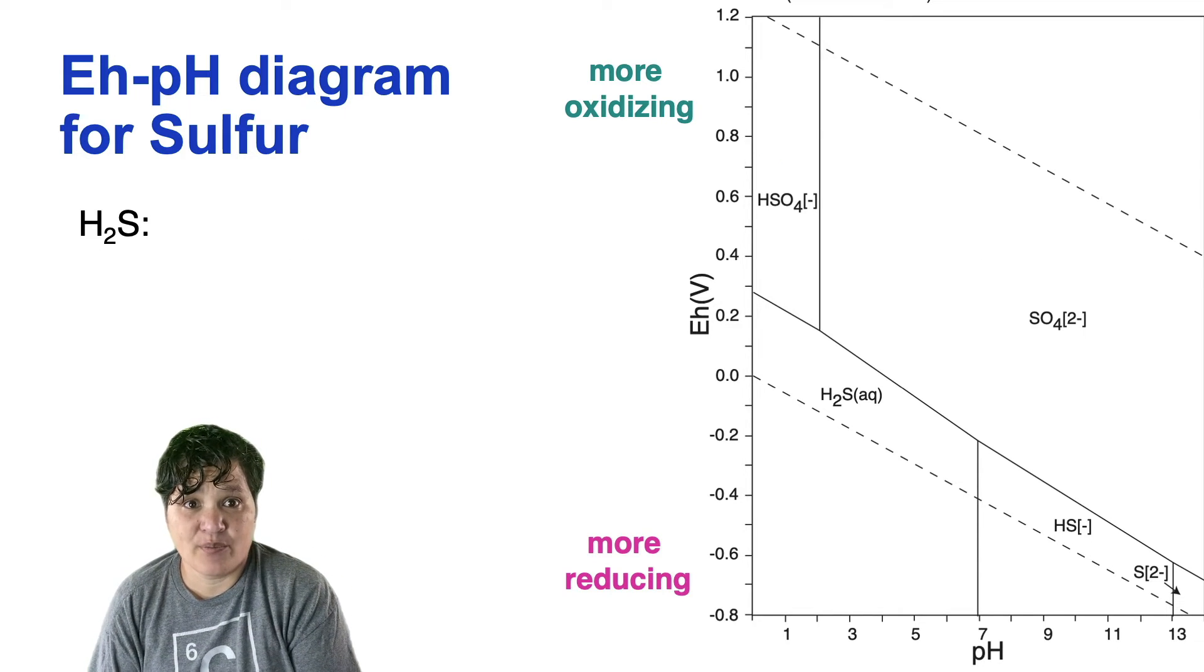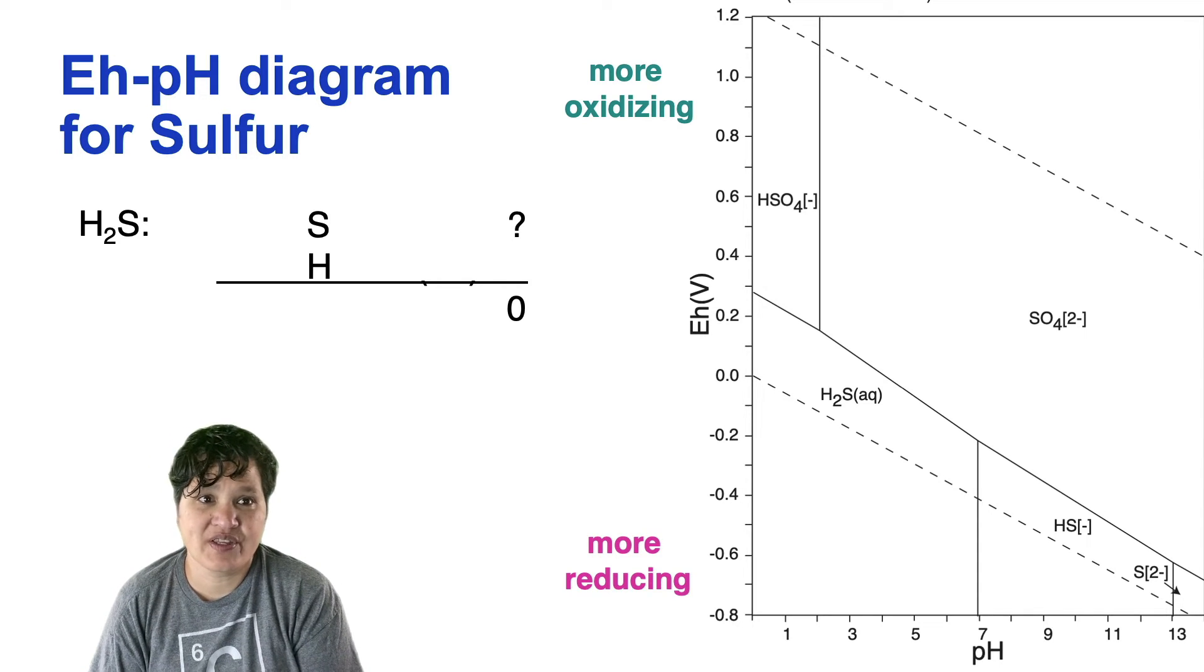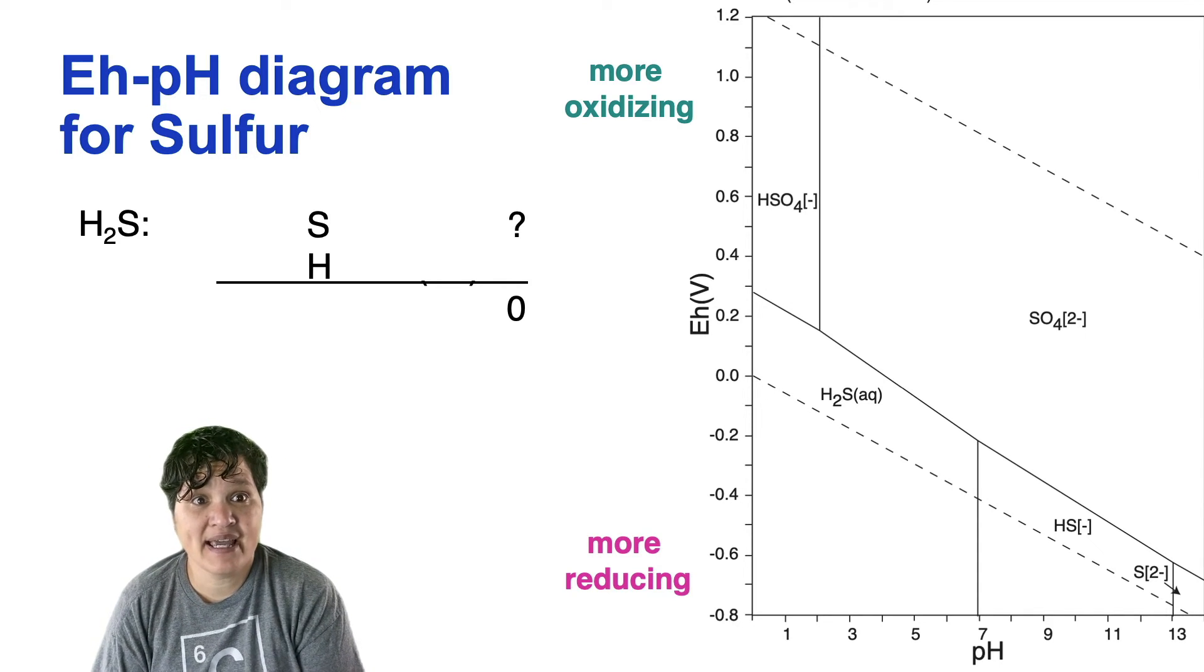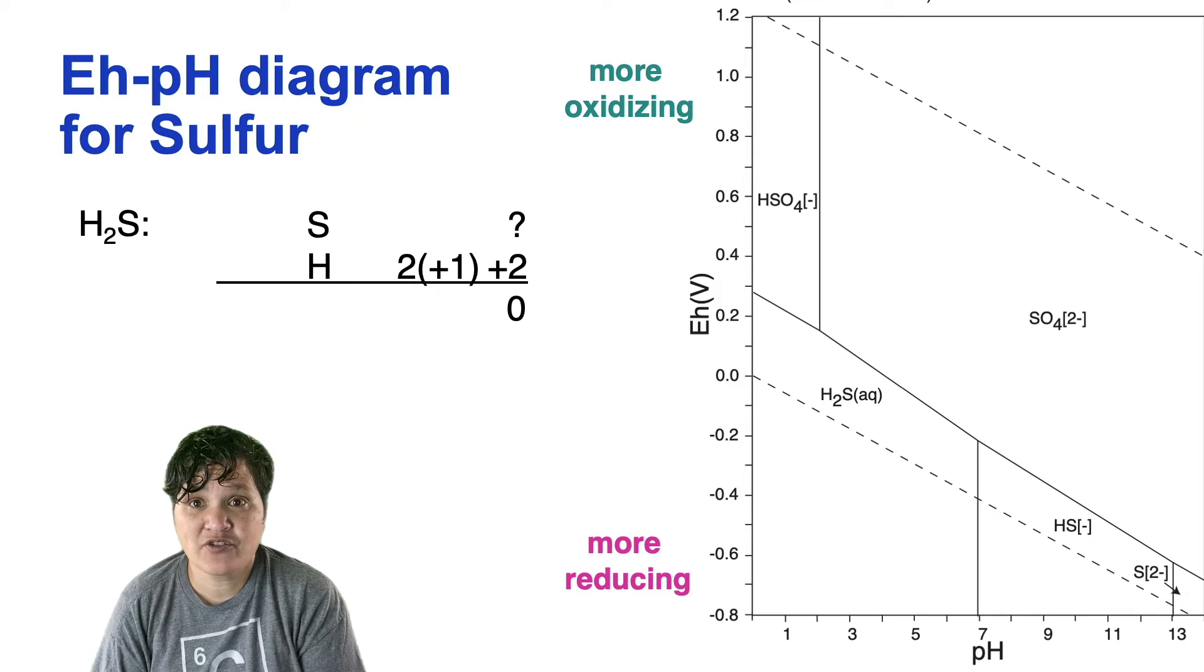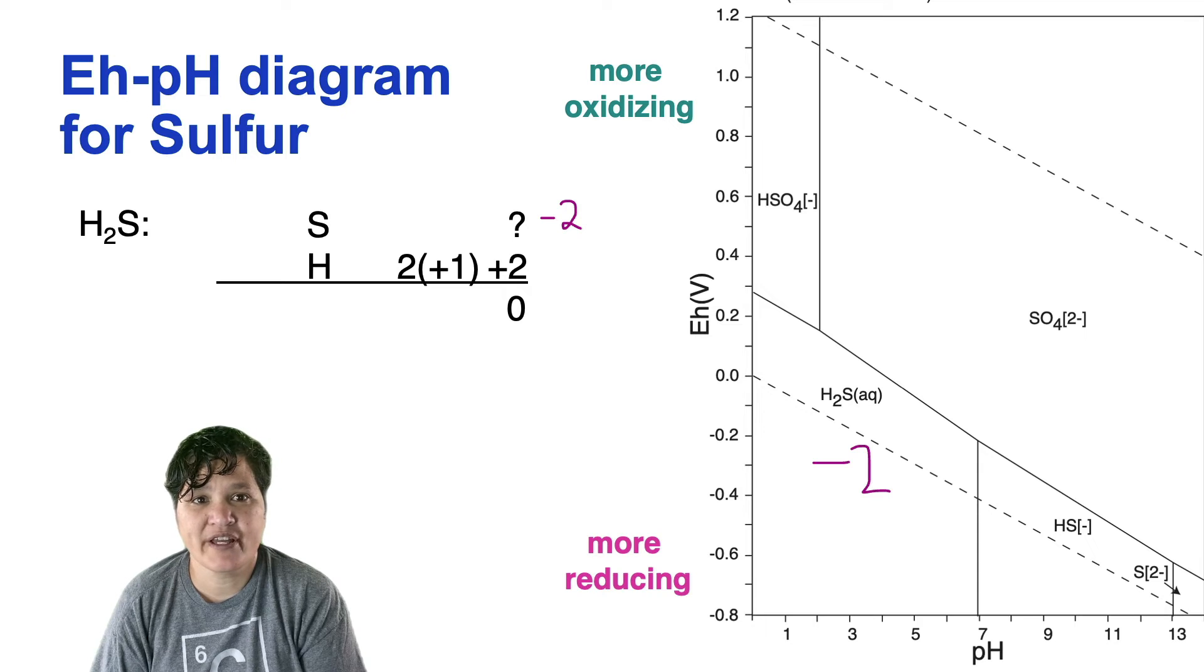Let's now calculate the oxidation number of sulfur in dihydrogen sulfide. This is a neutral molecule, so the sum of the oxidation numbers must add up to zero. We have two hydrogens, each with a plus 1 charge, giving a total of plus 2. So the oxidation number of the sulfur in this case must be minus 2. You can do similar calculations for HS- and the sulfide anion, and both of these have oxidation numbers of minus 2.